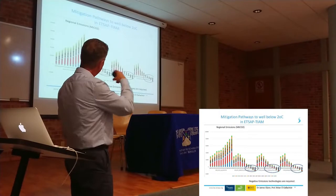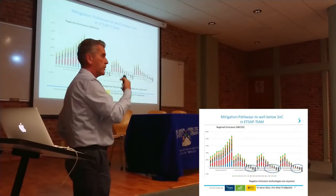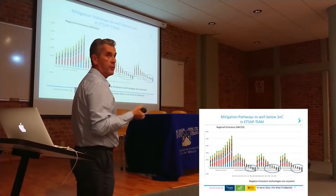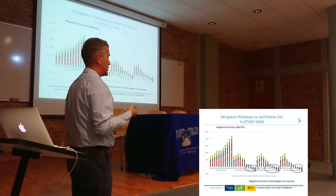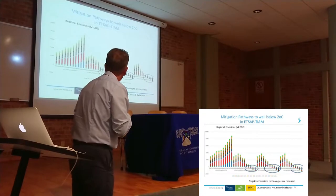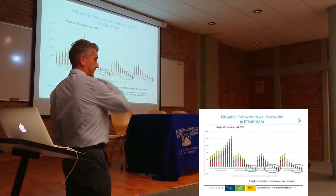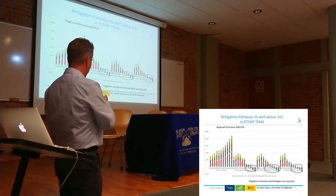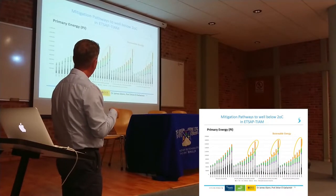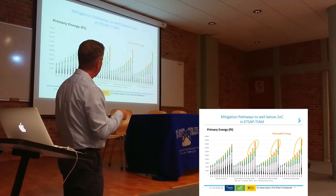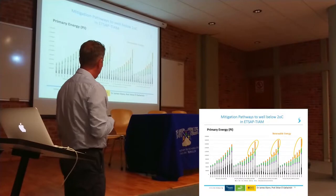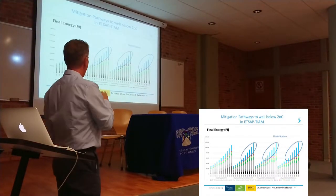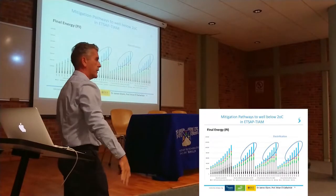These are the results regarding emissions from this scenario run, broken down by regions. In the reference scenario you can see what happens, but in the low decarbonization scenarios — below 1.5 degrees — we are talking about negative emissions after around 2070–2080. To achieve that decrease back to 1.5 degrees, we need an energy system with negative emissions. Looking at primary energy, renewables play a large role in all those scenarios, and in final energy the tendency across all scenarios is electrification.